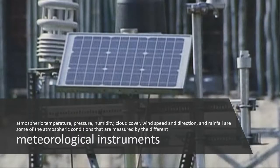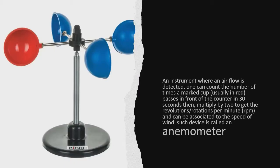Atmospheric temperature, pressure, humidity, cloud cover, wind speed and direction, and rainfall are some of the atmospheric conditions that are measured by different meteorological instruments.